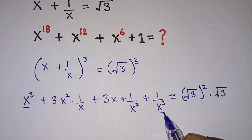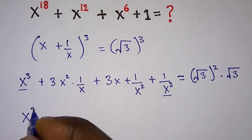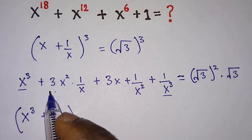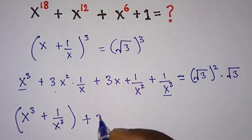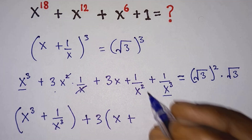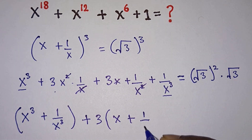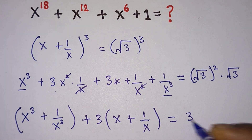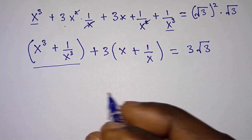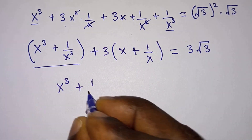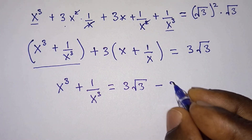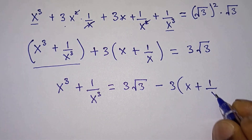Since some terms share the same powers, let's group them. We have x to the third power plus 1 over x to the third power. From the remaining two terms, we factor out 3, and we are left with x plus 1 over x. This is equal to 3 root 3. Then making x cubed plus 1 over x cubed the subject, we have x to the third power plus 1 over x to the third power is equal to 3 root 3 minus 3 times x plus 1 over x.